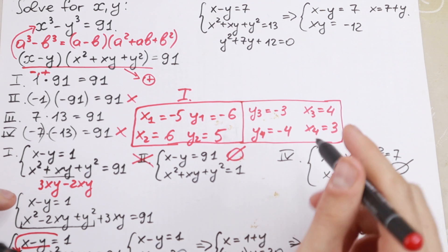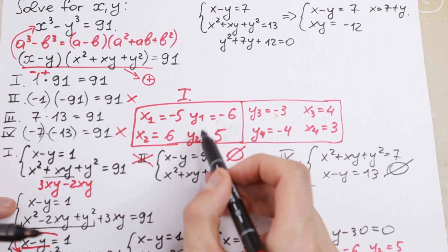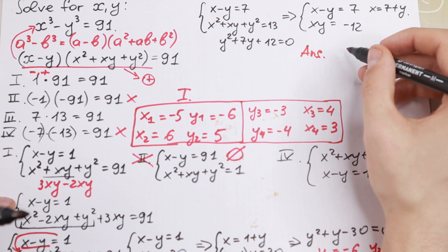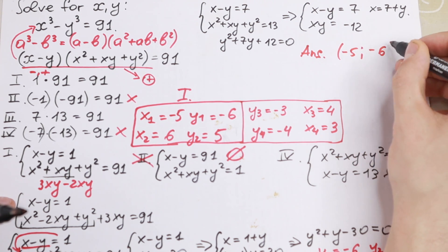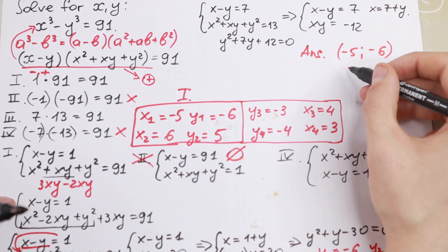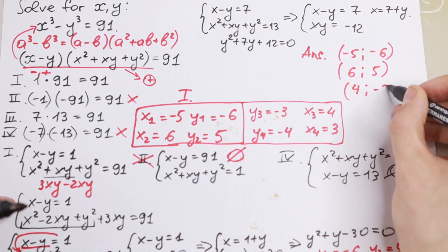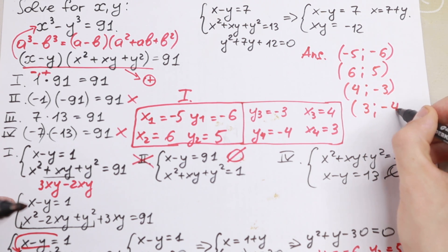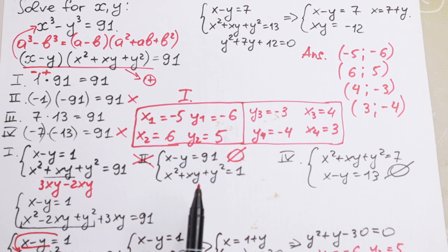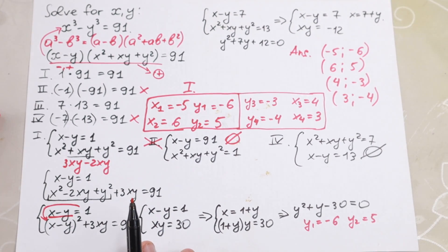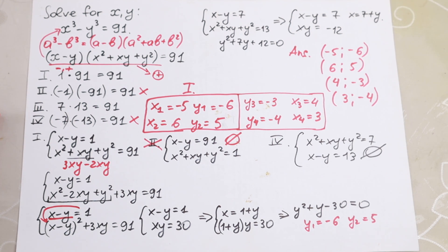So our final answer has four pairs of solutions: (minus 5, minus 6), (6, 5), (4, minus 3), and (3, minus 4). I hope you understand this solution. Thank you for watching, and see you in the next videos.